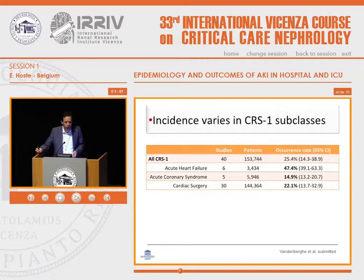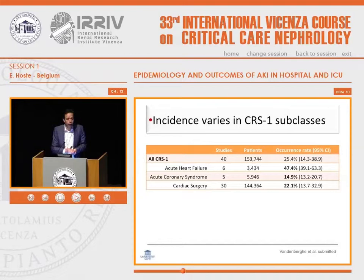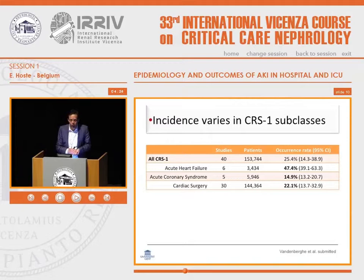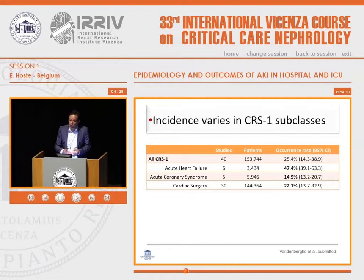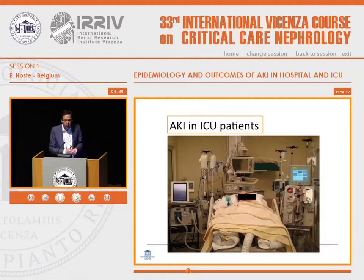This is illustrated in a meta-analysis we did on cardiorenal syndrome type 1. Different diseases can lead to cardiorenal syndrome type 1: acute heart failure is associated with a very high incidence of acute kidney injury — almost 1 in 2 patients will have AKI when hospitalized for acute heart failure — while cardiorenal syndrome and acute coronary syndrome patients have a much lower incidence. The underlying disease makes a huge difference, and this also translates to outcomes.